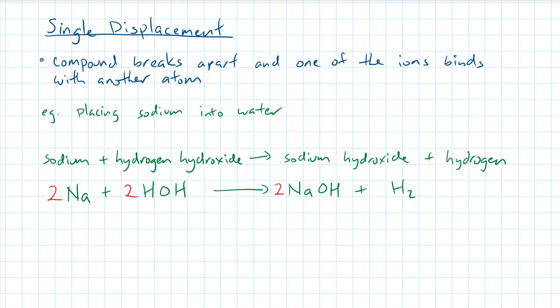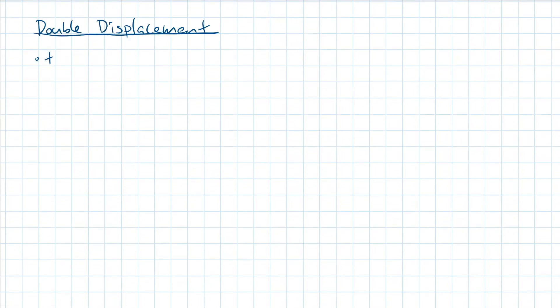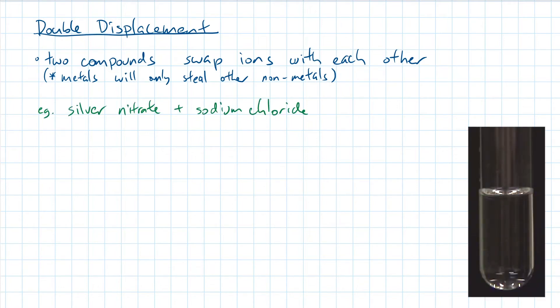The fourth type of reaction is double displacement. This is when two compounds swap ions with each other. Just keep in mind that in ionic compounds, metals will only bond with non-metals. When you mix silver nitrate with sodium chloride, you produce a white precipitate and a liquid solution. Can you predict what the two compounds are?